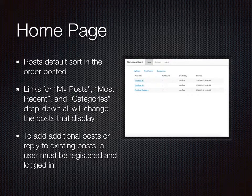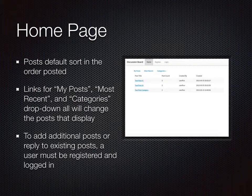There are links above the posts that say 'My Posts,' 'Most Recent,' and then a categories drop-down that allows you to select from the categories available when you make a new post. These are all designed to change the posts that you can view on the site. When you select 'My Posts,' if you're a logged-in user, it shows only the posts that you as the logged-in user have created. 'Most Recent' changes the sort to be the most recent post at the top. And the categories drop-down, if you select any of the categories, it will only show posts tagged as that category.